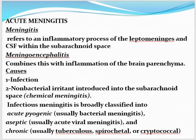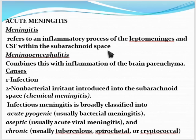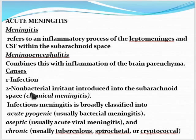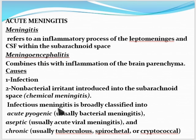Acute meningitis refers to an inflammatory process of the leptomeninges and cerebrospinal fluid within the subarachnoid space. If there is associated inflammation of the brain parenchyma along with meningitis, the term used is meningoencephalitis. Causes are usually infections, but non-bacterial irritants introduced into the subarachnoid space can cause chemical meningitis.